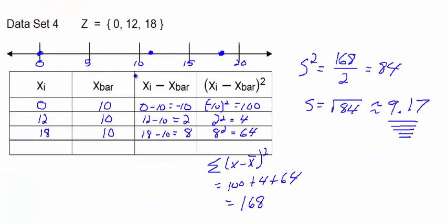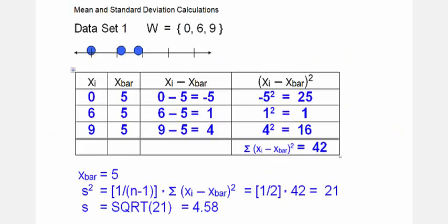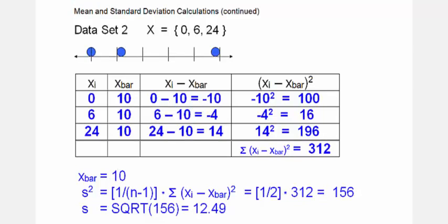So let's summarize. Here's data set 1, here's our values on the number line, and we see that s squared was 21 and s the standard deviation was the square root of 21 which was approximately 4.58. This is data set 2, we have more spread, this was the largest amount of spread. We ended up with s squared being 156 and then the standard deviation s would be the square root of 156 which is about 12.49.